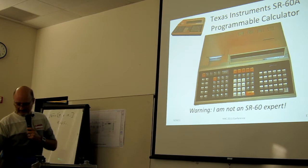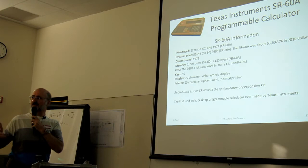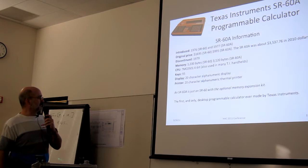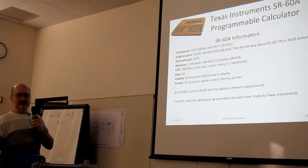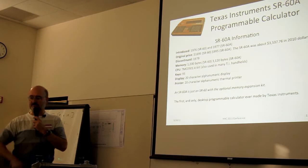Here are the specs. Introduced in 76. 1695. A year later, they introduced a version with more memory for 995. That doesn't sound right, but it's the best we've been able to figure out. It had 1,200 bytes of memory in the base model, 3,100 bytes in the SR60A. And it used a little TMC0501 4-bit processor. I cannot find any real technical information on this processor. I can't tell you the clock speed it's running at. A couple hundred kilohertz. Somebody probably knows, but I don't.